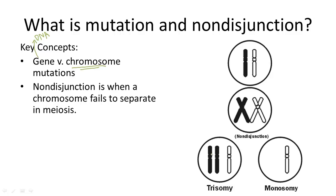If a cell ends up with an extra chromosome, we call this trisomy. You can see the extra chromosome here. 'Tri' refers to three, so trisomy is when there are three homologous chromosomes in a diploid organism — in other words, there's an extra chromosome beyond the normal diploid count.